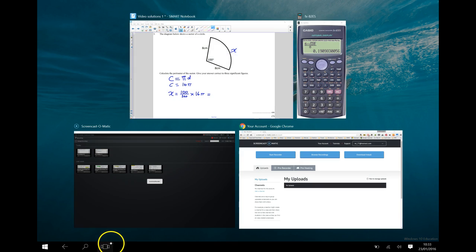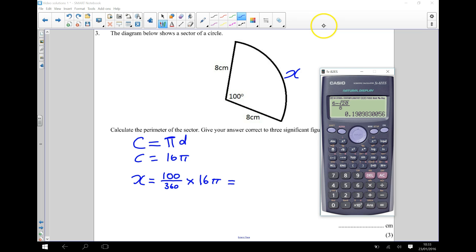So using my calculator, I've got 100 360ths times 16 times pi. So that's how much the length x should be.